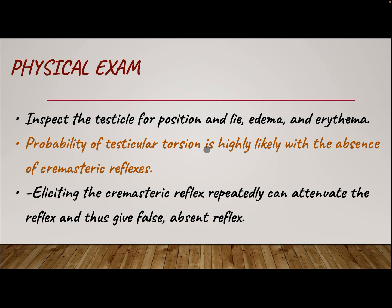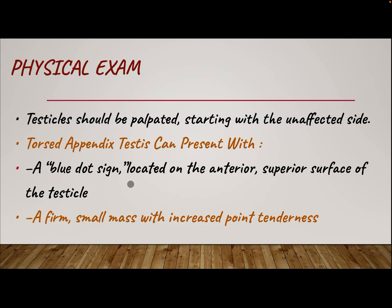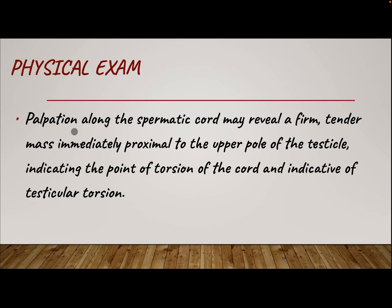Probability of testicular torsion is highly likely with the absence of cremastric reflex. Note that eliciting the cremastric reflex repeatedly can attenuate the reflex and give a false absence. The testicle should be palpated starting with the unaffected side. A torsed appendix testis can present with a blue dot sign on the anterior superior surface of the testicle — a firm, small mass with increased point tenderness. Palpation along the spermatic cord may reveal a firm, tender mass immediately proximal to the upper pole, indicating the point of torsion and indicative of testicular torsion.